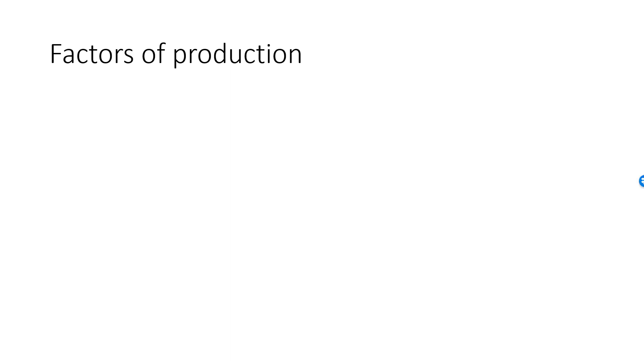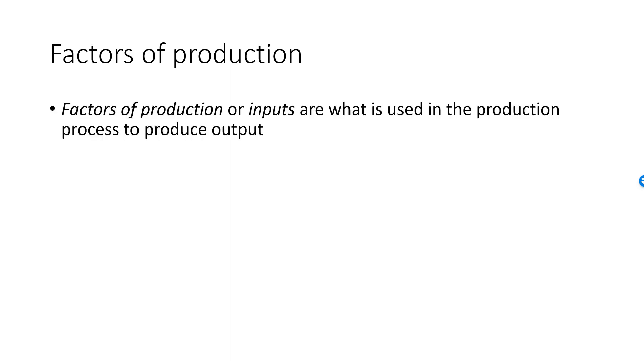Let's begin our discussion of production and technology by introducing factors of production. Everything that we use in the production process are called factors of production or inputs, and the good we produce is called the output.